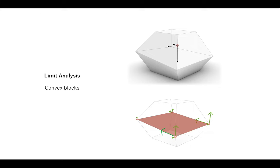When finding internal forces at each interface, I abstract or simplify an interface to a number of points, and find the internal forces at these contact points. I consider three components for each: one component normal to the interface and two tangential components, orthogonal to each other. Then we can check if they are in compression or tension.